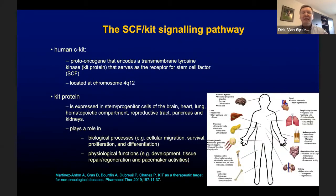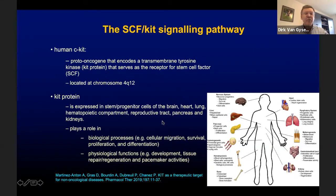Human CKIT is a proto-oncogene that encodes the KIT protein, a transmembrane tyrosine kinase that serves as the receptor for stem cell factor. The KIT protein is expressed in stem cells and progenitor cells of several organs, and plays an important role in several biological processes such as cellular migration, survival, proliferation, differentiation, and various physiological functions.